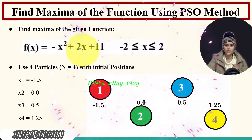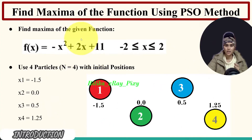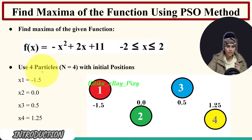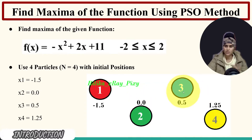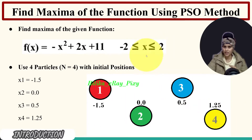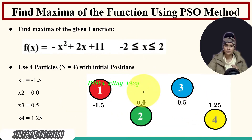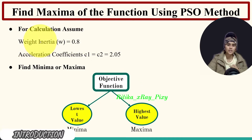The objective function is given and we have to find its maximum value. The range is -2 (lower bound) to 2 (upper bound). Particle positions are: first particle -1.5, second particle 0.0, third particle 0.5, fourth particle 1.25 - all within range. Weight inertia is 0.8 and coefficients c1, c2 are 2.05.